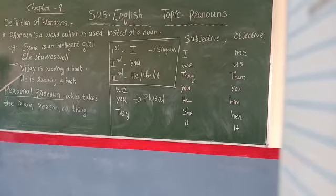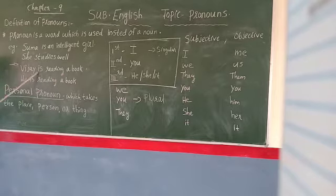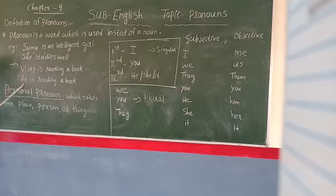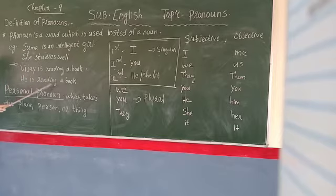Now look at the second example. Vijay is reading a book — that is the first sentence, where the noun is Vijay. Second sentence: He is reading a book. Instead of Vijay, we used the pronoun 'he.' Why did we use 'she' for Summa and 'he' for Vijay?